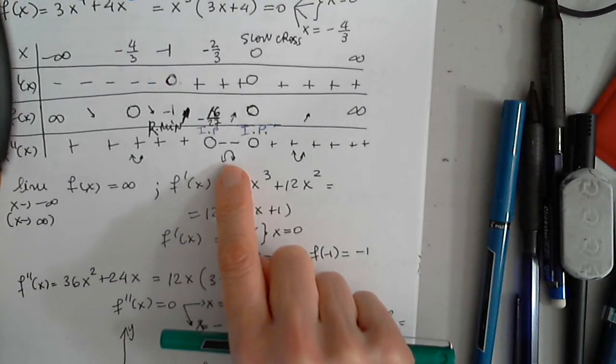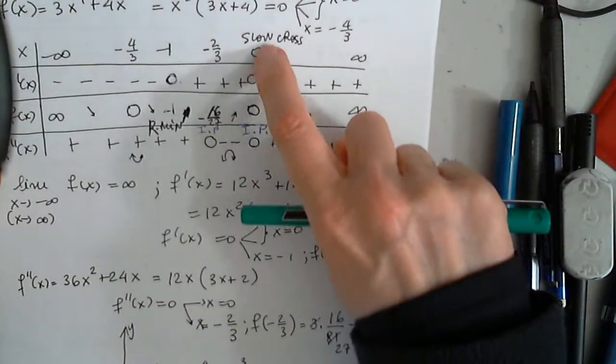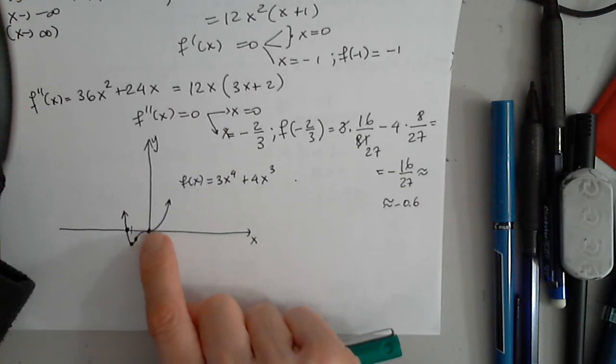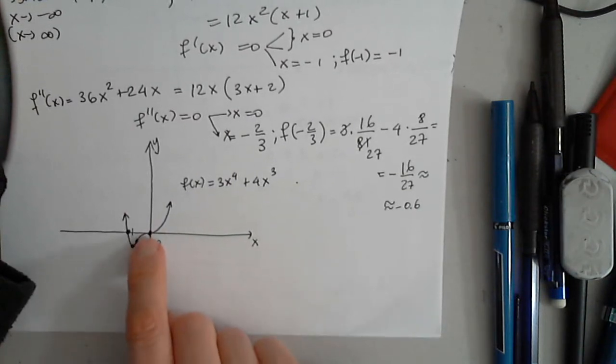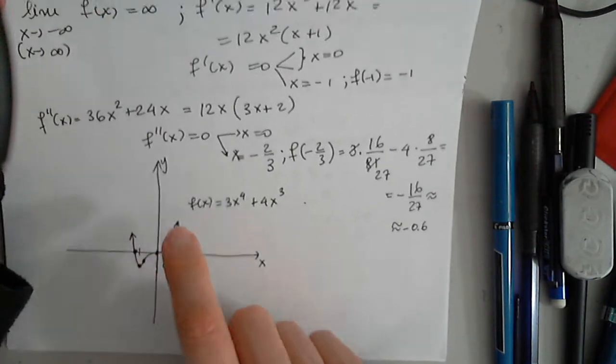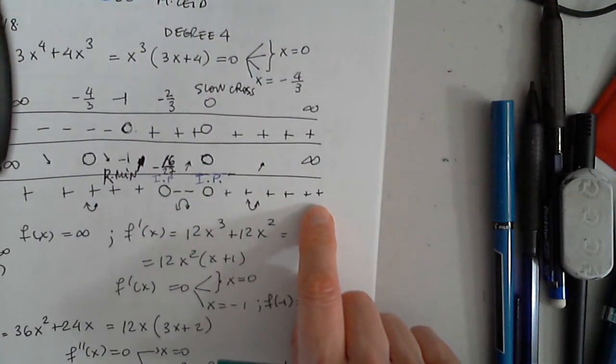Now the function changes concavity, opening down, but still increasing to the origin. Opening down, still increasing to the origin. Where it has another inflection point, changes concavity, it's always increasing towards infinity, and always opening up.